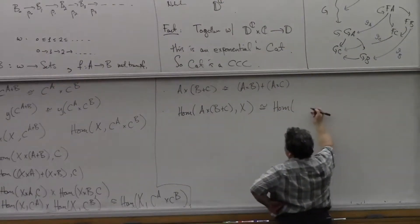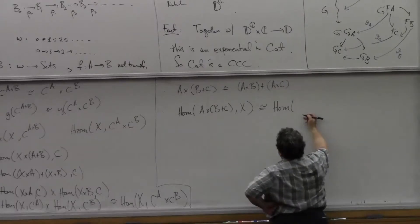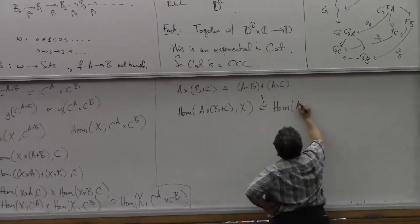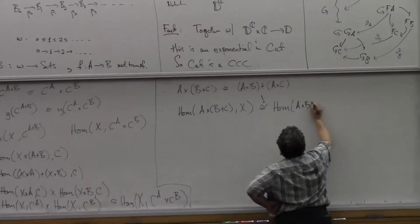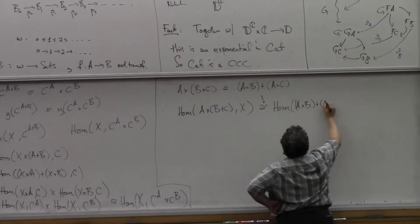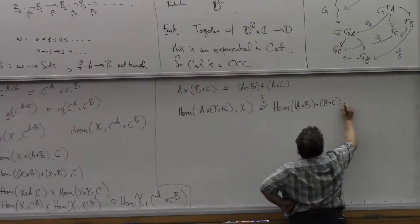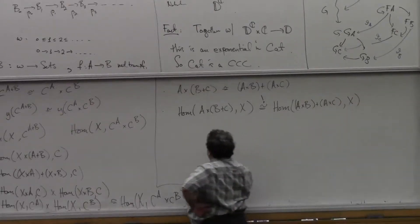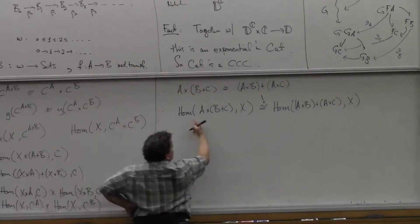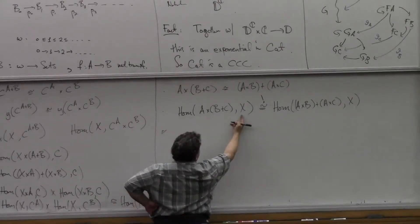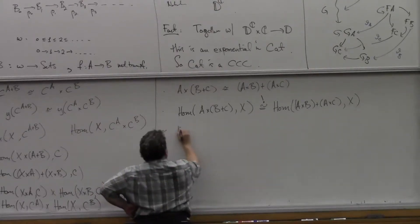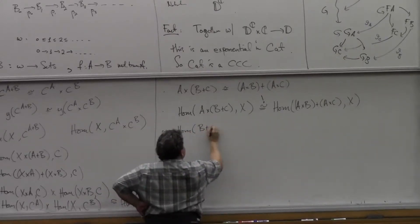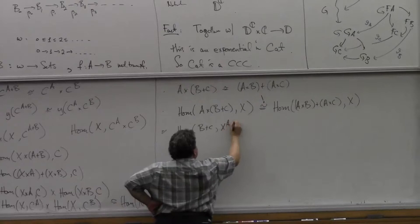In fact, all of these calculations are purely formal now that I've built the machine — that's what I'm trying to show. And I'm homing out of that. I need to show that I can get this isomorphism, but this thing I now know is hom of B plus C, x to the A.